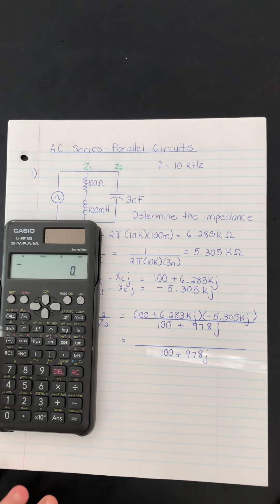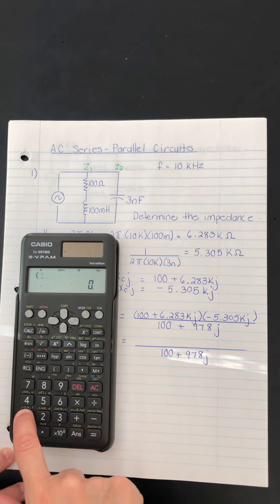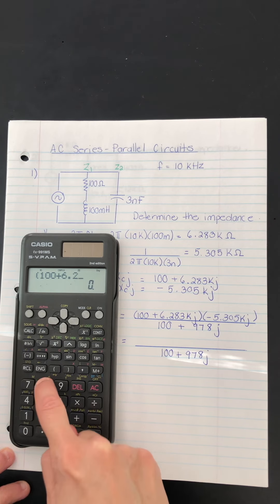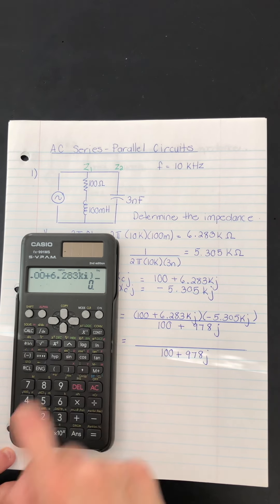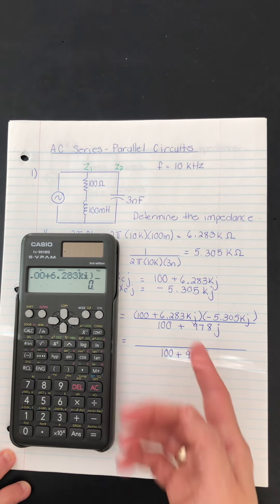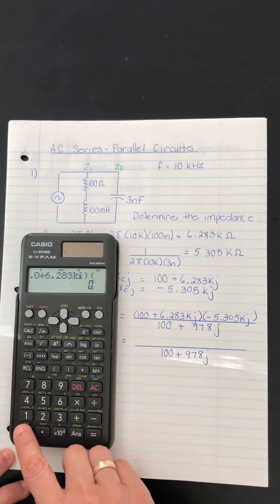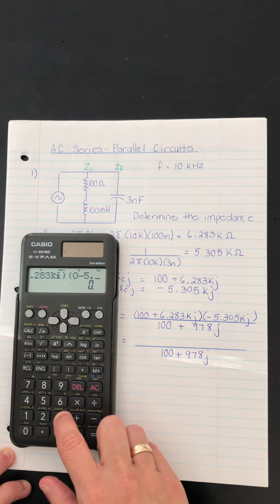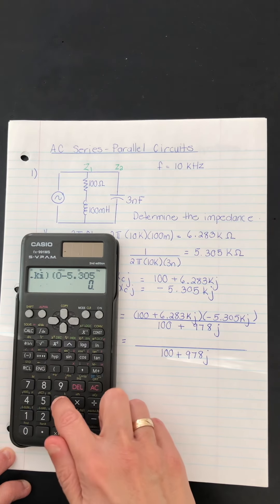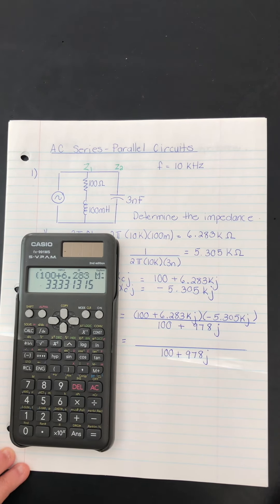So I'll just show you how we can easily do that multiplication first. I would basically type in what's shown there, except of course we use the I. So in a bracket, 100 plus 6.283 kilo. Now we have to put the I on it like that. Close the bracket. If you want to punch a multiplication sign, you can, although it's implied. So in the other bracket, well, the real part is zero. So zero minus 5.305 kilo. And again, don't forget the I. Close the bracket and here we go.